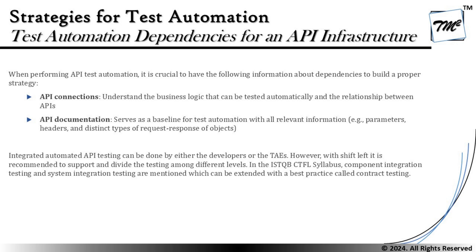The second item is to understand the API documentation, which serves as a baseline for test automation with all relevant information, including the parameters, headers, and distinct types of request-response objects. The documentation covers what information you are going to supply with each request sent to the SUT via this API — there are body, headers, parameters, and various other details such as authentication and data type that you need to provide to make that request fulfilled.